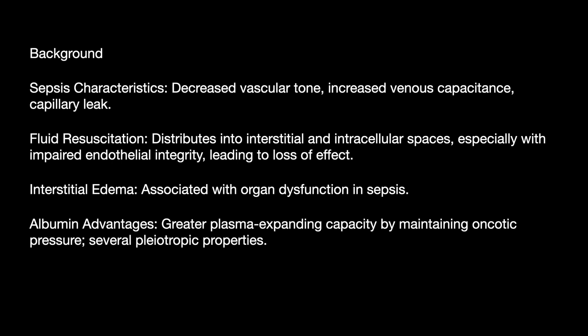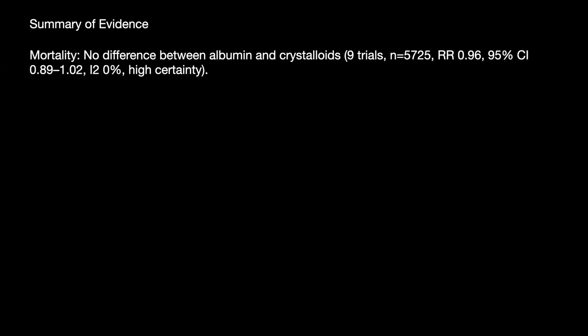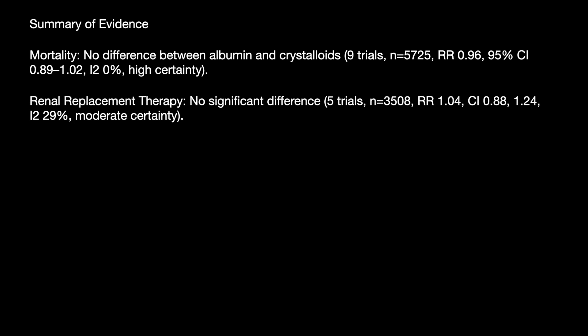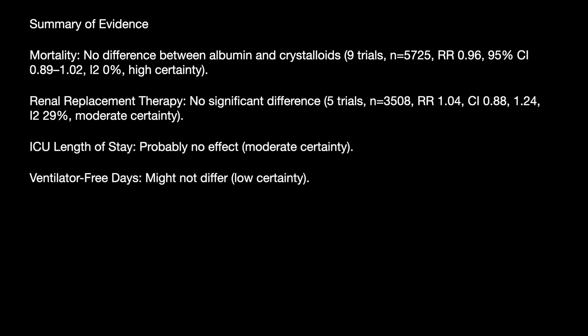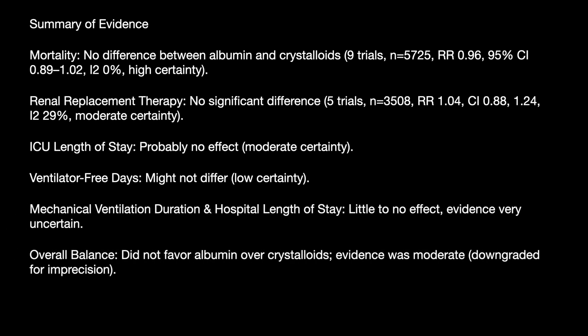The advantage of albumin in sepsis is greater plasma expansion and maintenance of oncotic pressure, along with many pleiotropic effects. Summary of evidence: mortality — no benefit across 9 trials; RRT — no benefit across 5 trials; ICU length of stay — no effect; ventilator days — no difference; mechanical ventilation — no effect. Overall, the evidence did not favour albumin over crystalloids.